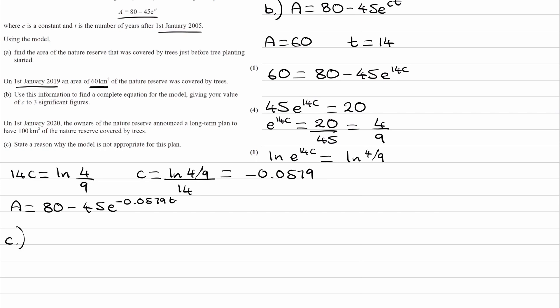On to part C. On the 1st of January 2020, the owners announced a long-term plan to have 100 km² of the nature reserve covered by trees. State a reason why the model is not appropriate for this plan. For this question, 2020 makes no difference, because whether we started in 2020 or 2010, long-term plan means the same thing in terms of T. Think about what does that mean for T? What does a long-term plan mean? And with that condition for T, can we get an area of 100 km²?